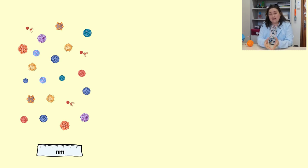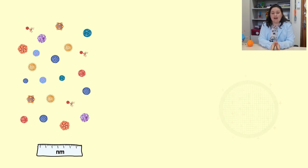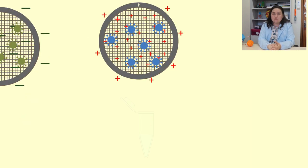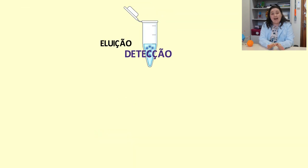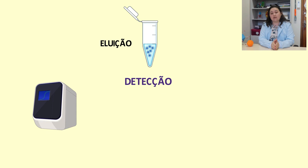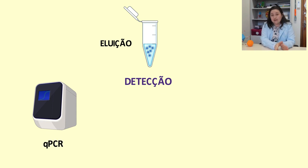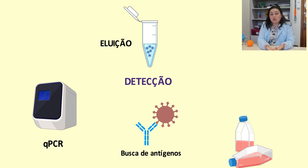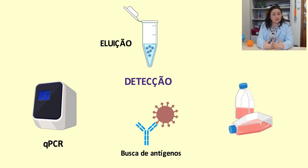Os vírus são muito pequenos e precisam ser concentrados, serem recuperados do ambiente. Para isso, se utilizam materiais normalmente eletropositivados ou eletronegativados, onde os vírus irão se agregando, como se fossem membranas, concentrando-se para que se consiga fazer depois uma eluição — retirar esses vírus dessas membranas e poder então fazer a detecção dos mesmos. A detecção viral a partir de ambientes pode ser feita usando métodos baseados em PCR, a busca de antígenos virais, bem como estudos de infecciosidade viral utilizando métodos de cultura celular.